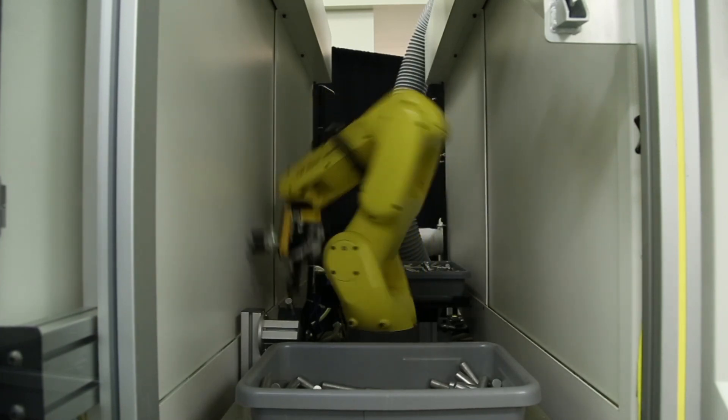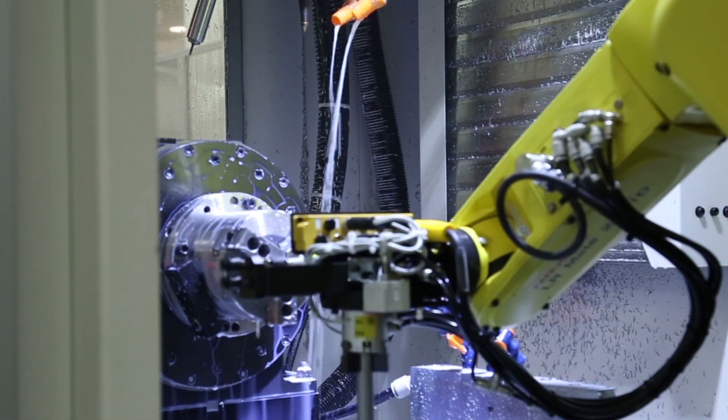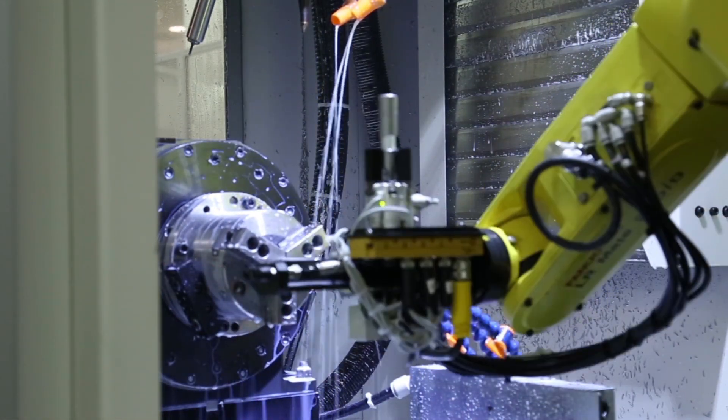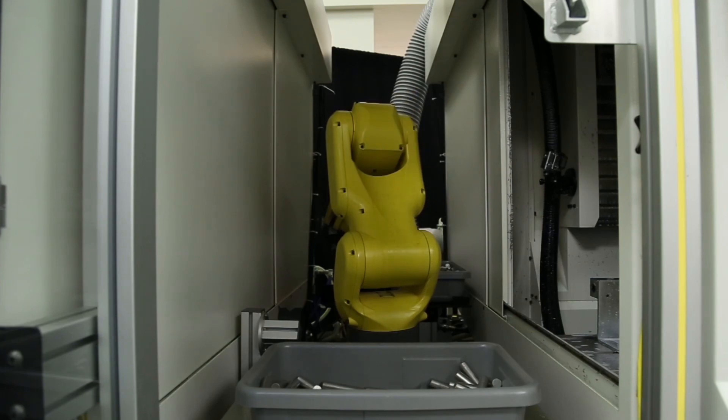The process starts as the robot picks the uncut slug and loads it into the first of two high-speed RoboDrills seen on the left for the first half of a machining cycle.